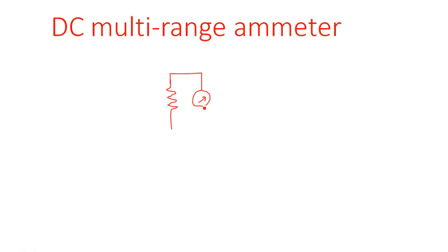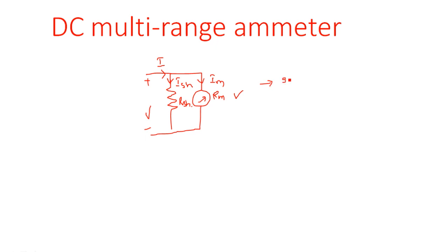Hi everyone. In this lecture we are going to see how to construct a multi-range ammeter. In the previous lecture we have seen a single range ammeter — how we constructed it using a shunt resistor placed across the meter. Here the voltage is applied, the unknown current is flowing, and it splits into the shunt current ish and meter current im, with meter resistance Rm and shunt resistance Rsh. This type of construction can measure only a single range.